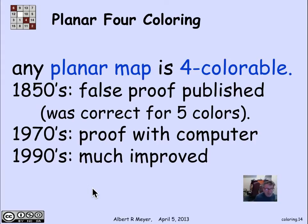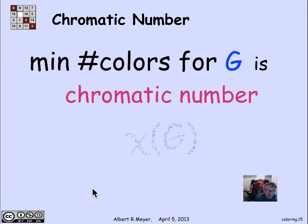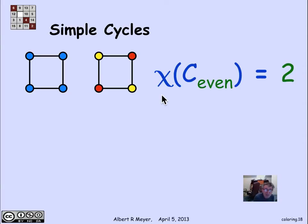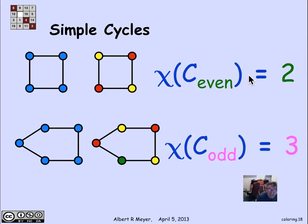In general, if we take an arbitrary graph and ask for the minimum number of colors to color it, that's called the chromatic number of the graph — chi(G). A simple cycle of length four can be colored with two colors by alternating. This generalizes: any even-length cycle has chromatic number two. On the other hand, if the cycle is of odd length, a third color is needed — alternating colors causes a clash when you wrap around, so the chromatic number of an odd-length cycle is three.